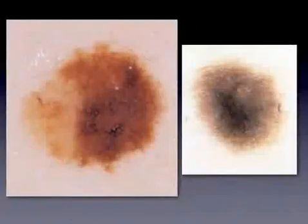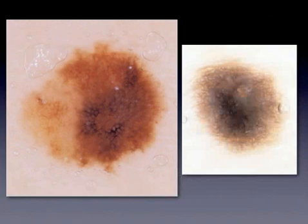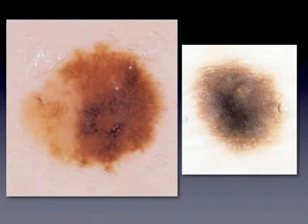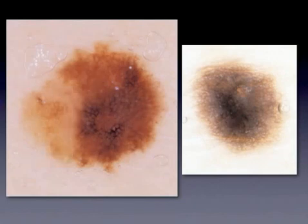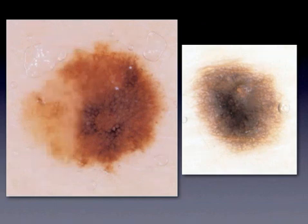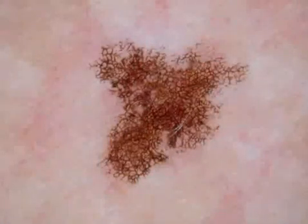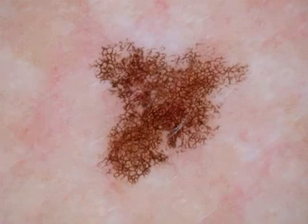Again, melanoma in situ on the left with only one feature — network — which can be defined as atypical because of the presence of more than one typology. A reticular nevus on the right with one type of network, thus typical. This is also called black nevus because of the black color in the center, a type very frequent in individuals of dark skin types. Here, an example of ink spot lentigo with the stereotypical black broken-up network. Again, one type of network means benign.